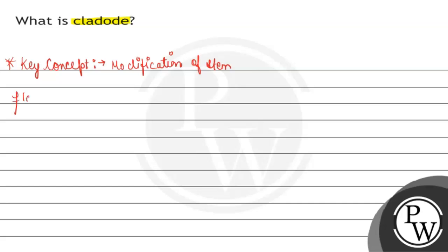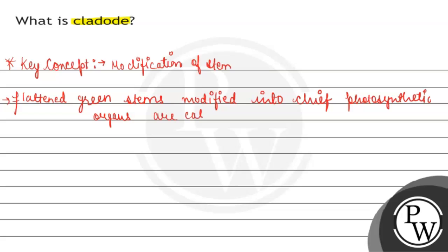Cladode is where flattened green stems modified into chief photosynthetic organs are called cladode.